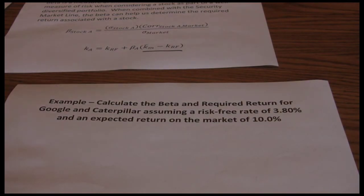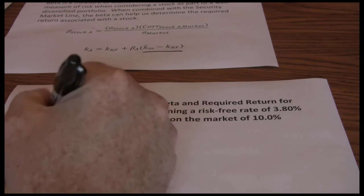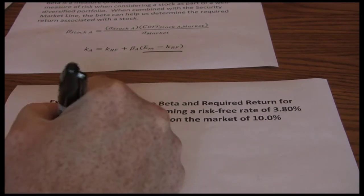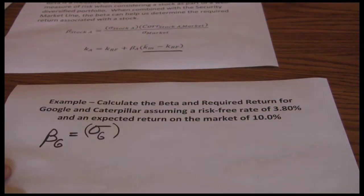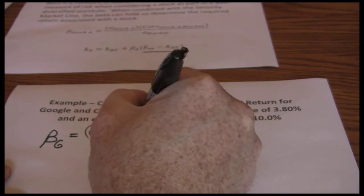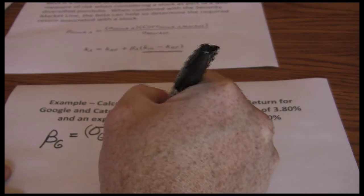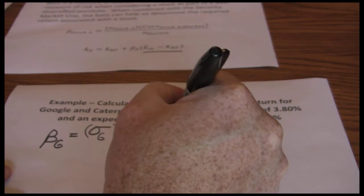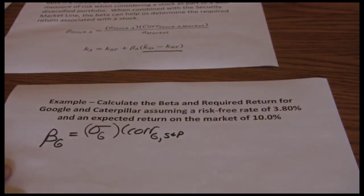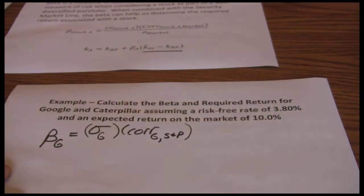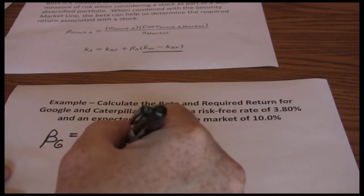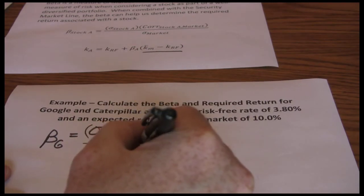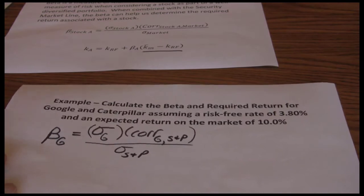In order to calculate beta, we know the beta for Google is equal to the standard deviation of Google times correlation between Google and the S&P 500. That's our measure of the market. We want to divide that by the standard deviation of the market which is the S&P 500.